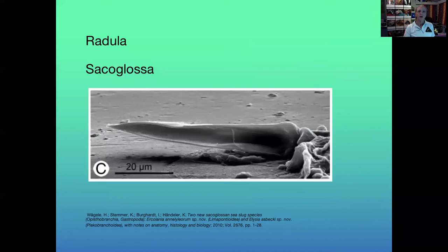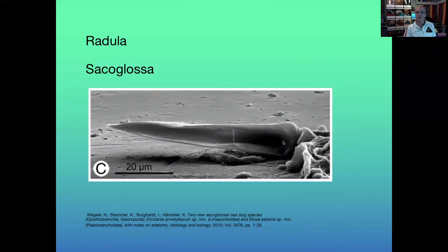Not all nudibranchs have a radula. Some can actually secrete a digestive enzyme that turns food to soup, then suck it up. Others suck in food and have gizzard plates that grind it up. This image from a sacoglossan — an algae-eating sap-sucking slug — shows a dagger-like radula tooth used to pierce the algae and suck up the insides.